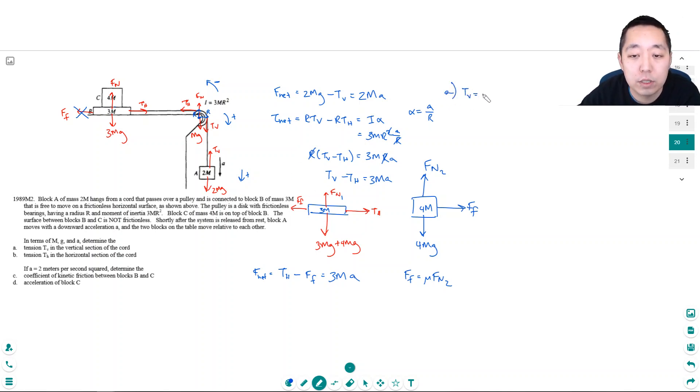Tv is equal to Th plus 3MA from this part of the equation. And I found that Tv is also equal to 2Mg minus 2MA from this equation. So this is enough. I actually only needed that first one. Because they said you could use A.